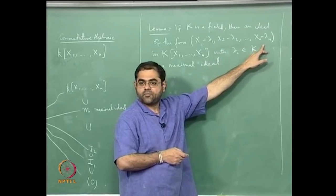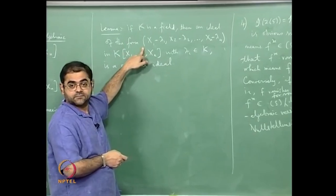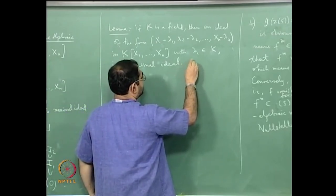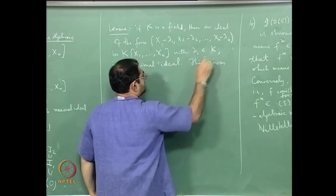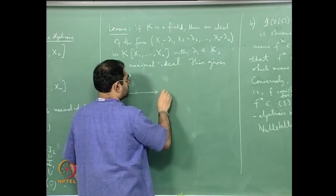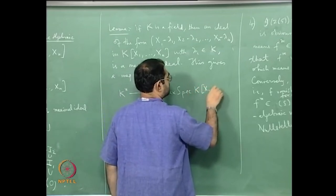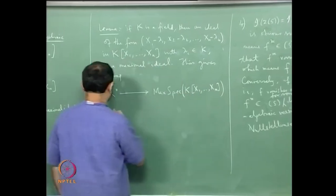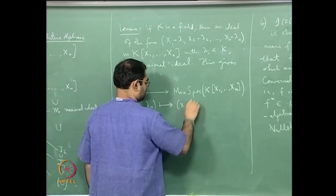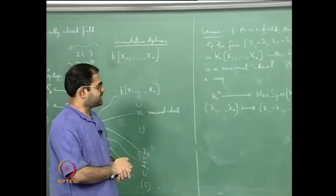If you take an n-tuple of points of the field, there is automatically a maximal ideal associated to it. This gives a map from K^n to Max Spec of K[x1,...,xn], which sends the point (λ1,...,λn) to the maximal ideal generated by (x1-λ1,...,xn-λn).